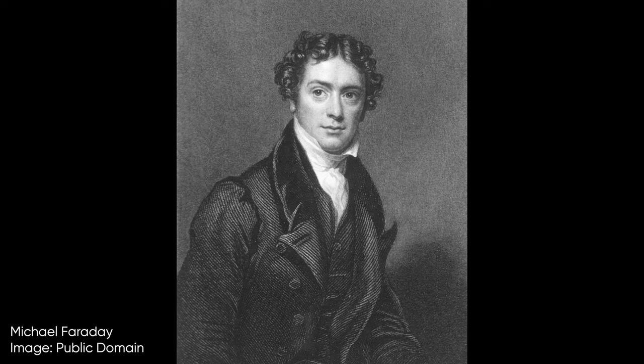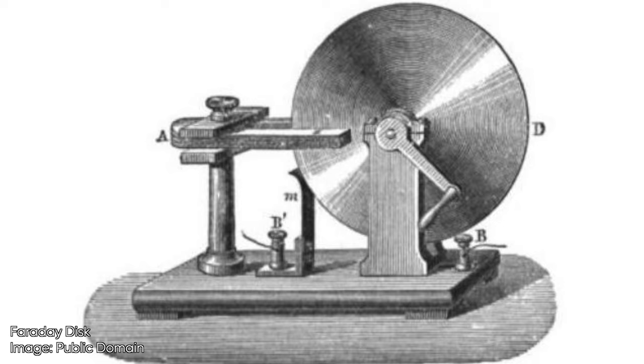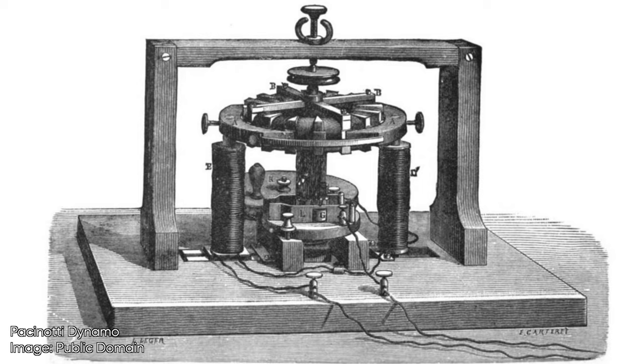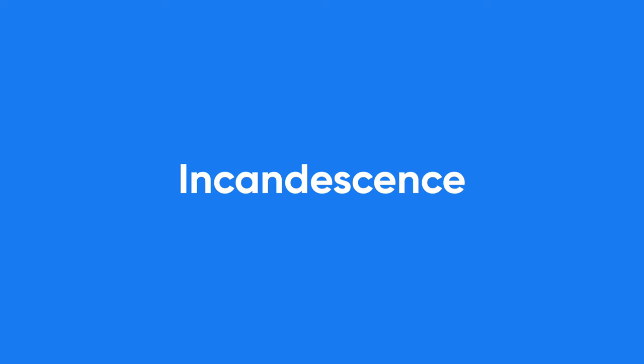In 1831, Michael Faraday, one of Humphrey Davy's former assistants, discovered electromagnetic induction and created the first generator, known as the Faraday disc. Through the mid-1800s, improvements in generator technology led to more power. The first practical electric lights were based on Davy's 1806 carbon arc lamps, but they were powered by generators instead of batteries.